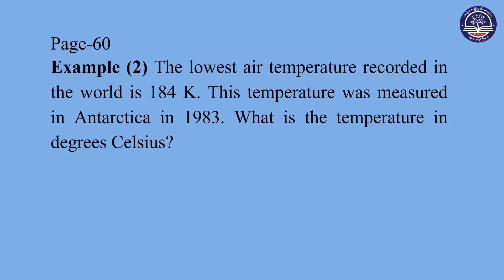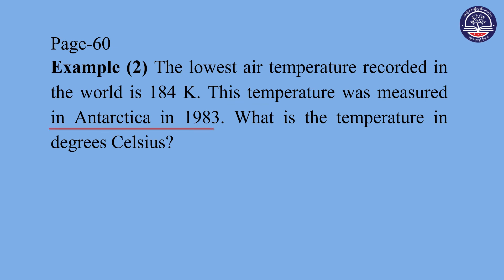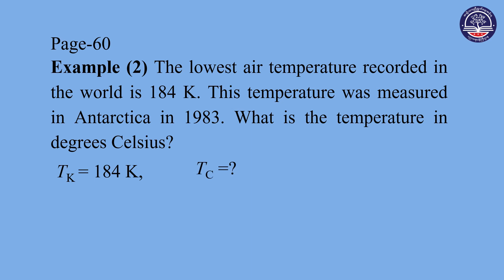The lowest air temperature recorded in the world is 184 Kelvin. The Vostok station records in Antarctica measured this temperature in 1983. Using the formula, the temperature in degrees Celsius can be calculated: K equals degrees Celsius plus 273.